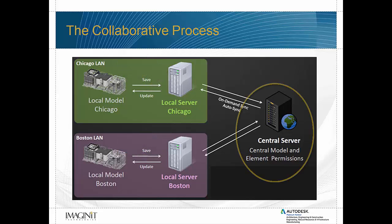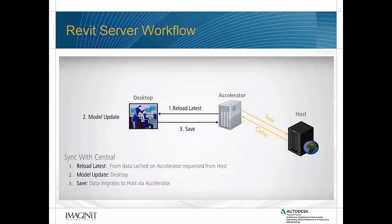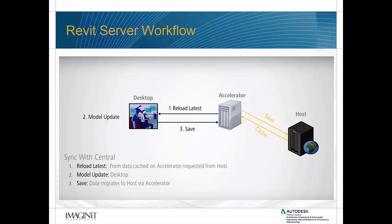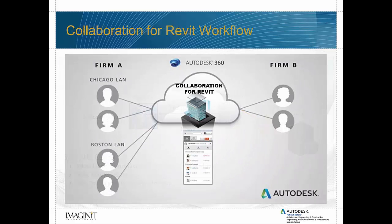The main difference is where that host server is located. In the Revit Server environment, your company provides the hardware, and you'll need to act as both the host and accelerator roles. Your users connect to the local accelerator server to get access to the local copy of the central model. With Collaboration for Revit, Autodesk's servers act as the host, and each user acts as its own accelerator.